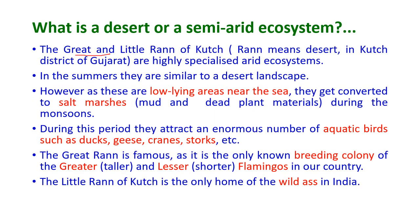The Great Rann and Little Rann of Kutch are highly specialized arid ecosystems — 'Rann' meaning desert. They are situated in the Kutch district of Gujarat. In summers they are similar to a desert landscape; however, as these are low-lying areas situated near the sea, they get converted into salt marshes during the monsoon period.